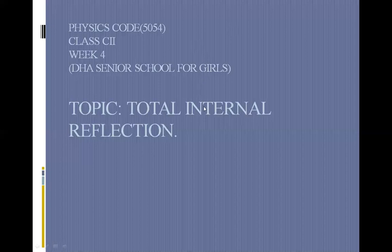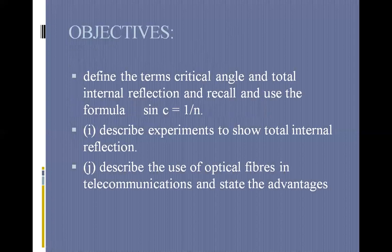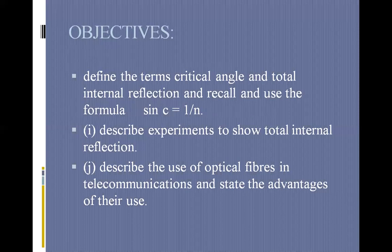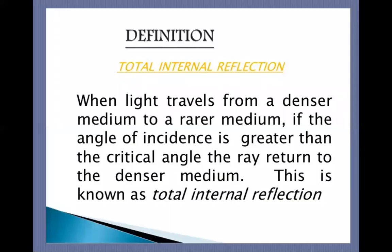It's Week 4, Class C2, Physics, code 5054. Today's topic is Total Internal Reflection — a very interesting topic we will discuss in detail. The objectives are: first, discuss the terms critical angle and total internal reflection, and recall and use the formula sine C equals 1 over n. Second, describe experiments to show total internal reflection. Third, describe the use of optical fibers in telecommunications and state the advantages of their use.